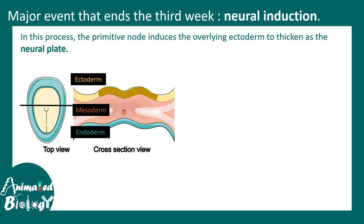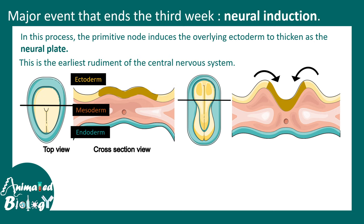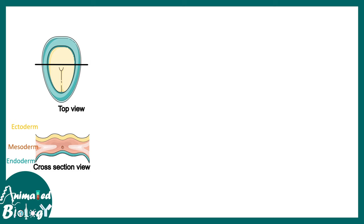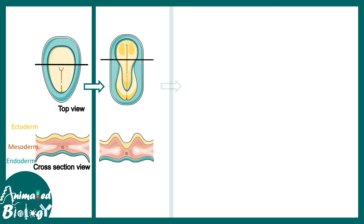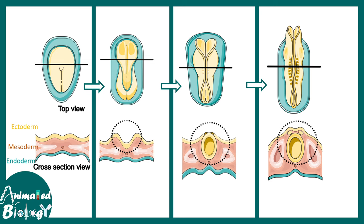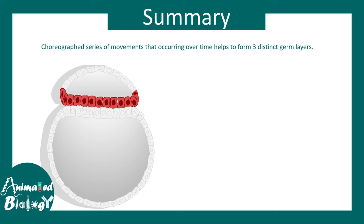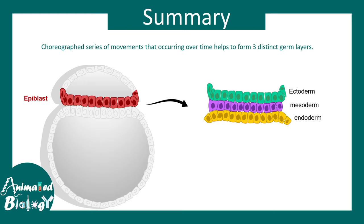In neural induction, the notochord secretes molecules like Sonic Hedgehog, among others, which induce the ectodermal region to form the neuroectoderm. That neuroectoderm then folds to form the neural tube. Imagine the entire ectoderm as a thin sheet — during neurulation, this sheet folds to form a tube-like organization. That is what happens at the end of the third week. In summary, gastrulation is the most important event during the third week, involving coordinated movements that result in formation of three germ layers — ectoderm, mesoderm, and endoderm — from the epiblast.